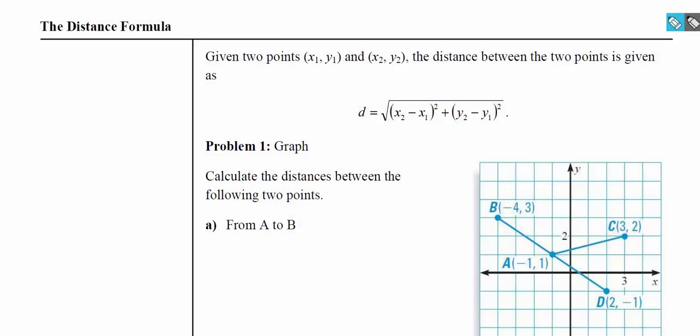The distance formula looks intimidating but it's not that bad. It's very related to the Pythagorean theorem from right triangles: a squared plus b squared equals c squared.